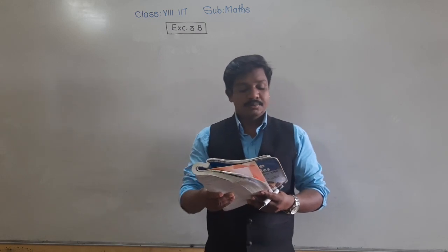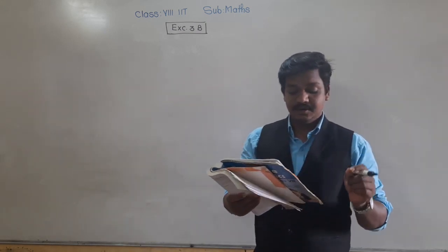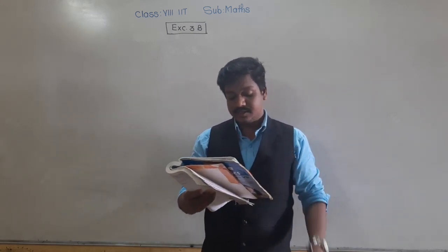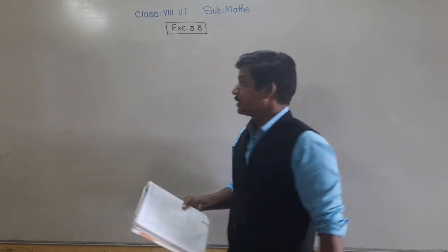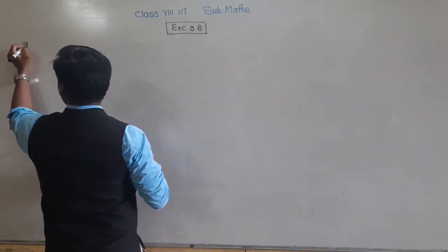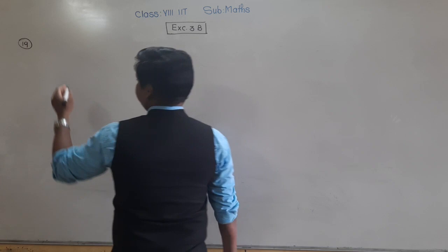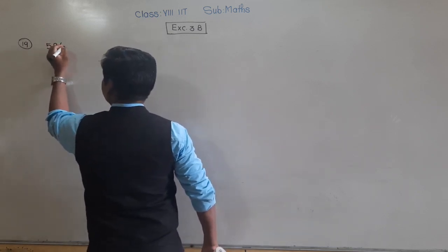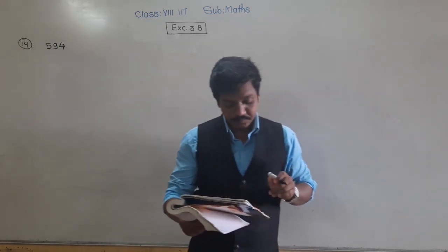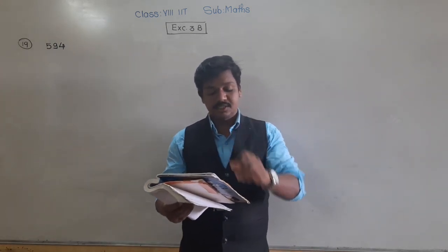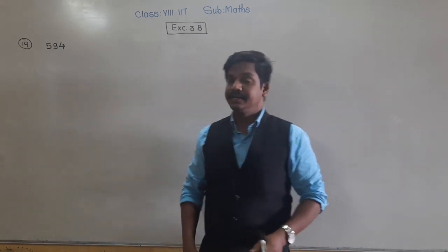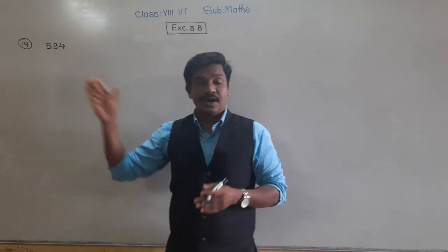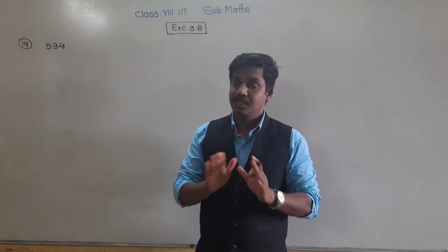Problem number 19: What least number must be added to 594 to make the sum a perfect square? The given number is 594, and we need to find which least number must be added so that we get a perfect square. This means 594 is not a perfect square.